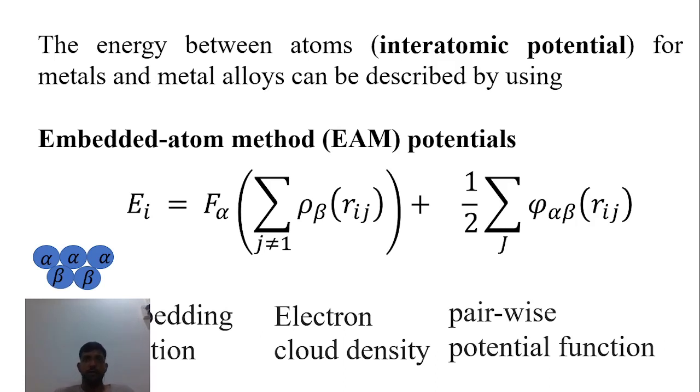For ionic bonding, the energy depends on four terms: ionization energy of a cation, electron affinity of anions, electrostatic attraction between charged molecules, and a Pauli repulsion term. Now I am going to talk about bonding in metals and metal alloys.